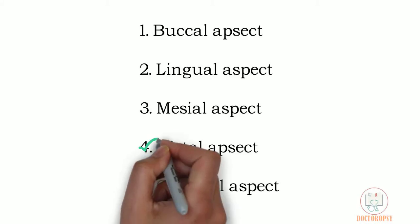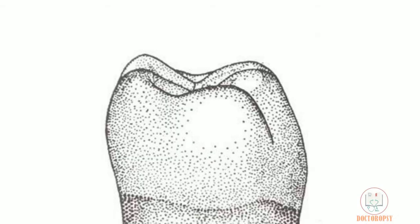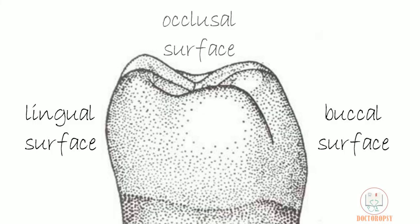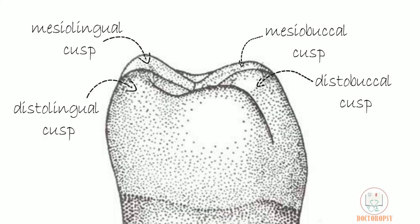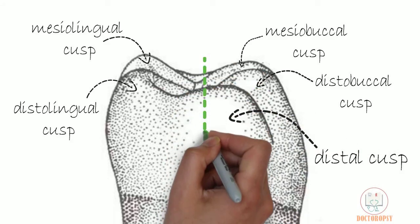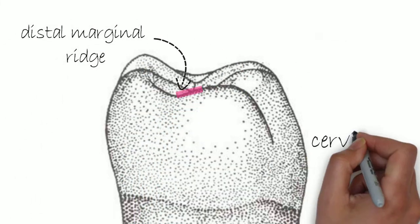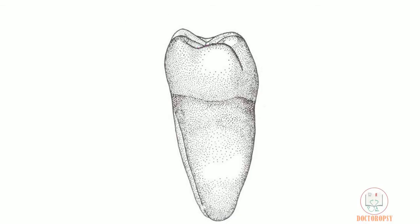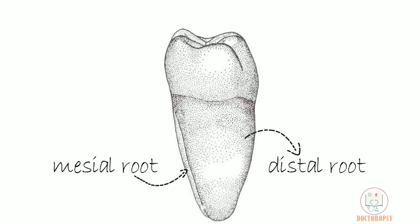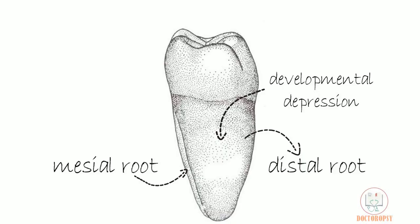Coming to the distal aspect: the outline form of the crown is similar to that of the mesial aspect. As the distal side is smaller than the mesial side, more surfaces of the crown are visible from this aspect, and parts of all cusps are seen. The distal cusp is seen in front, which is slightly buccal to the midline. The distal marginal ridge is short and the cervical line is flat. The distal root is in front, with parts of the mesial root also being visible. A developmental depression may or may not be seen on the distal root.